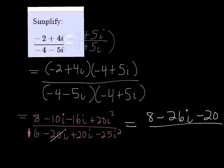In the bottom, the negative 20i and the positive 20i will cancel out, and the i squared is negative 1, making this a positive 25. So I have 16 plus 25, which is 41.